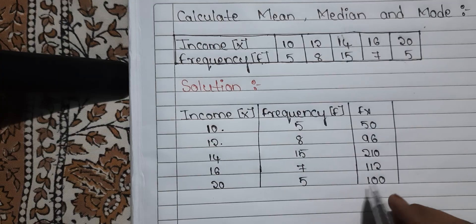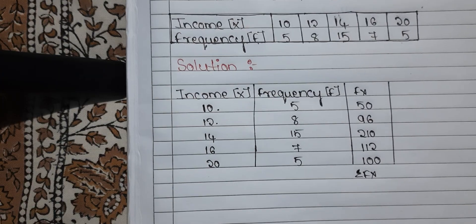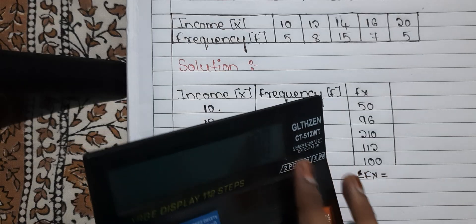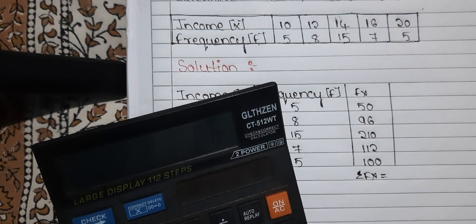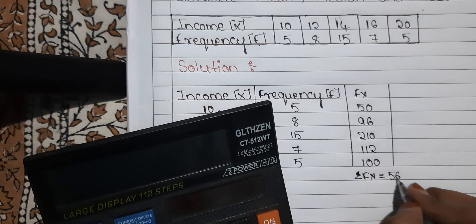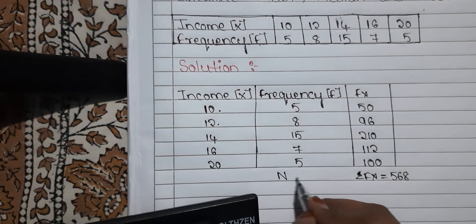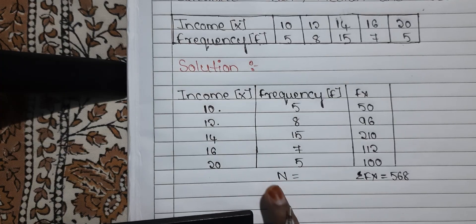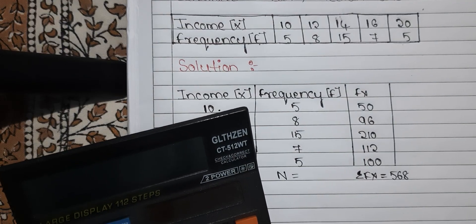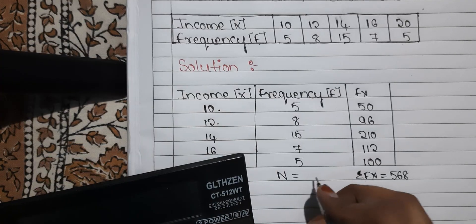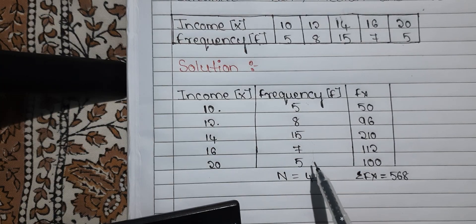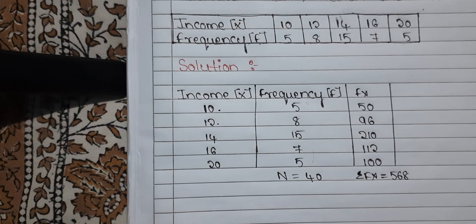After finding Fx, we need Sigma Fx — that is, when you add all the Fx values you get Sigma Fx. 50 plus 96 plus 210 plus 112 plus 100 equals 568. We also need N, which is Sigma F — when you add all the frequency values: 5 plus 8 plus 15 plus 7 plus 5 equals 40.